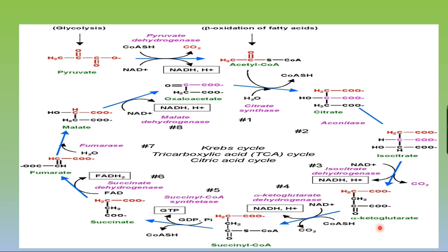Alpha-ketoglutarate undergoes simultaneous decarboxylation (removal of CO₂) and dehydrogenation (releasing H⁺ from NAD⁺), and combines with coenzyme A to form succinyl-CoA. This reaction involves a dehydrogenation step, a decarboxylation step, and addition of CoA, catalyzed by alpha-ketoglutarate dehydrogenase.